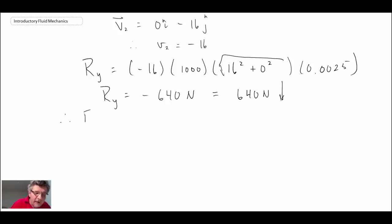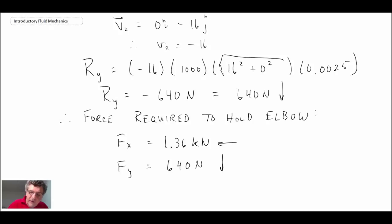So what we can write is the force required to hold the elbow. We can say it is fx is 1.36 kilonewtons in the left, and fy 640 newtons down. And we can then resolve that vector. And the angle would be 25.2 degrees, and the magnitude is 1,503 newtons or 1.5 kilonewtons. So that is the solution to the problem of the reducing elbow.